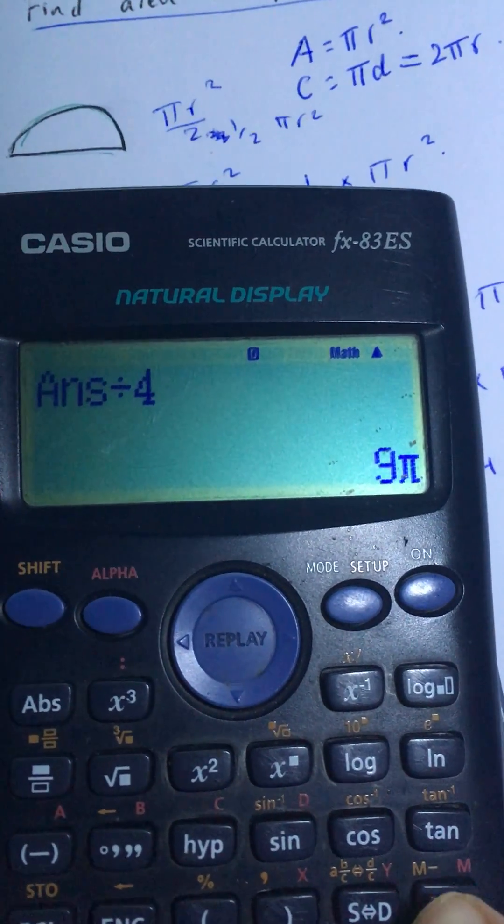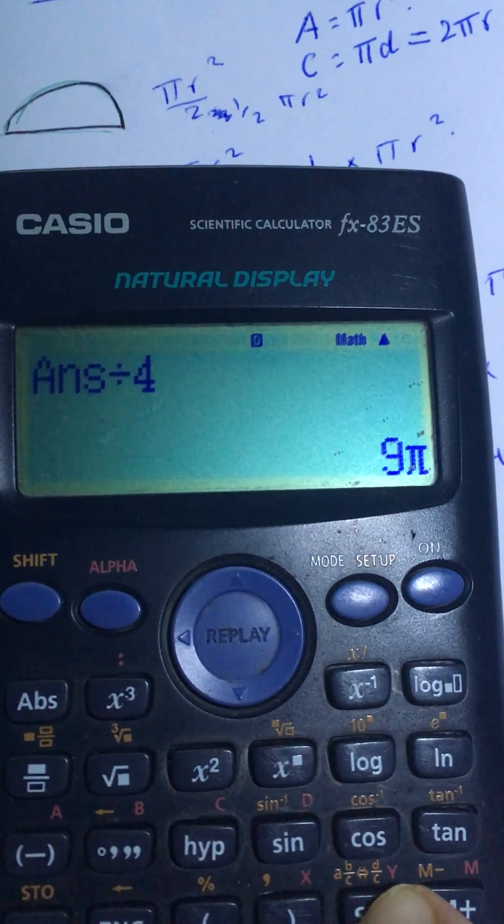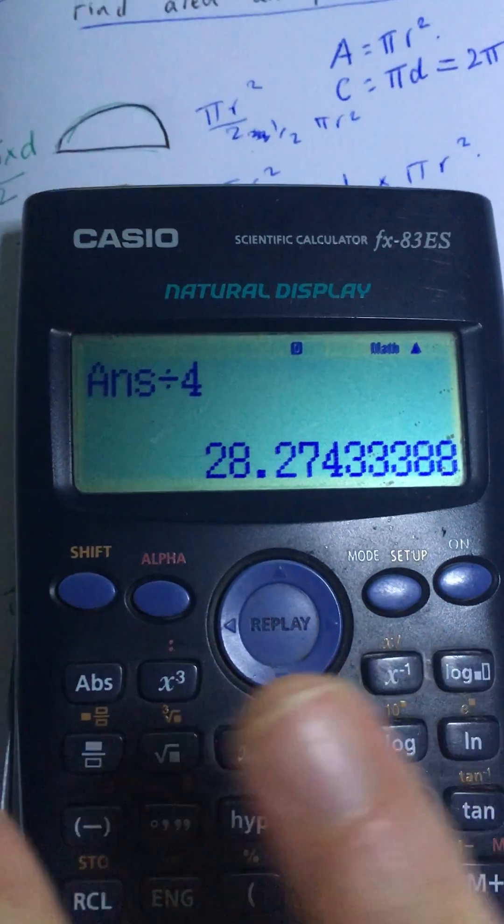That gives me 9π, that's exact form. I press S⇔D to get it in decimal form. 28.3.